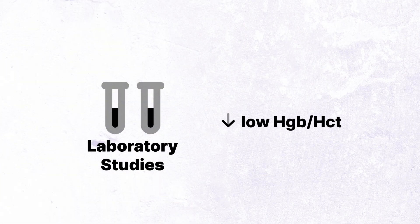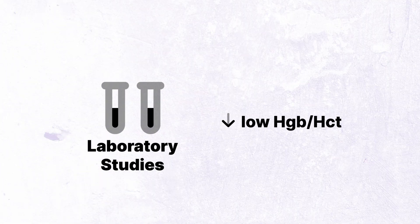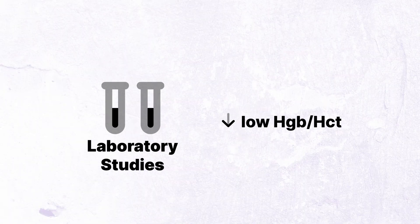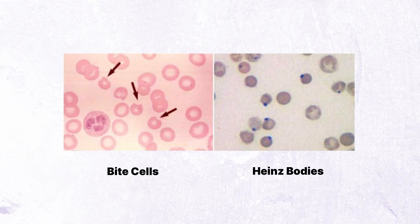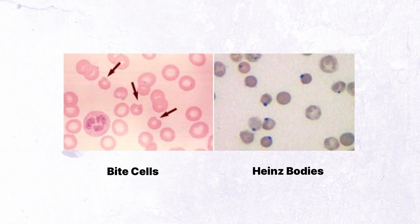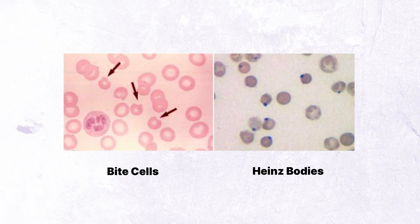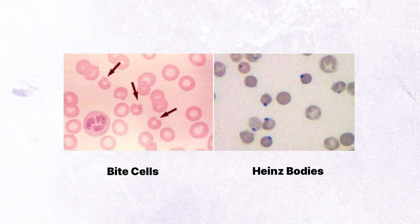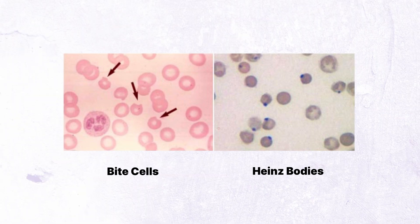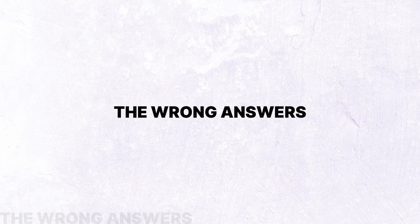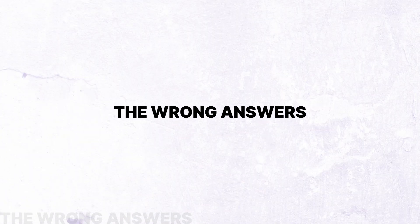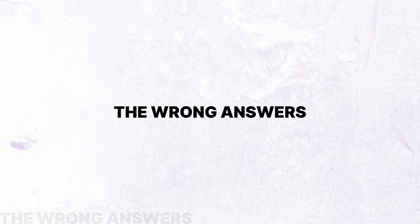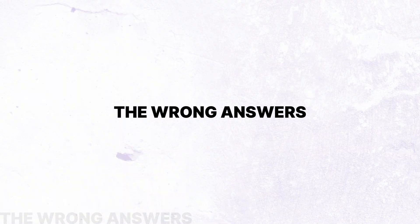Laboratory findings will classically show hemoglobin levels decreasing acutely, even to as low as 2 to 5 grams per deciliter. Bite cells and Heinz bodies are observed during this time. The diagnosis depends on direct and indirect demonstration of reduced G6PD activity in erythrocytes. All the wrong answer choices can lead to hemolytic anemia, but are not classically associated with favism, and can be differentiated based on findings on a peripheral smear.